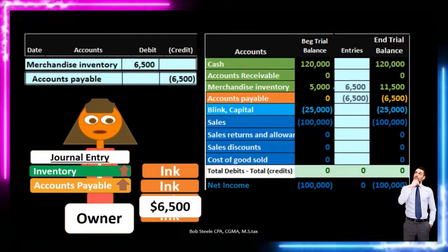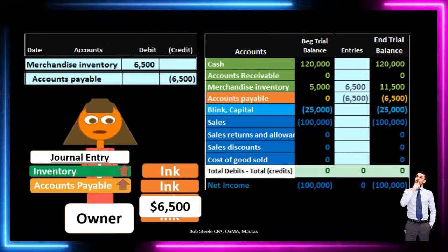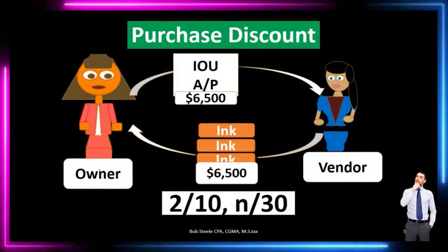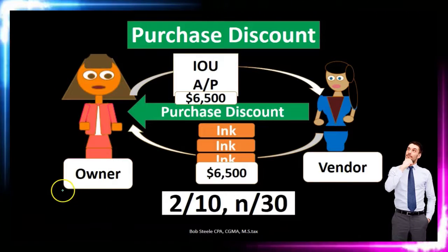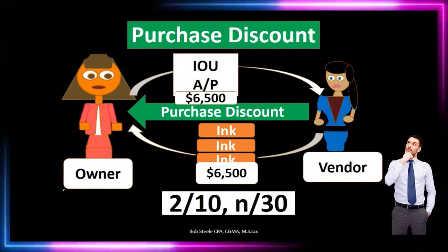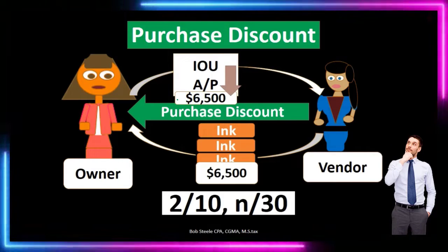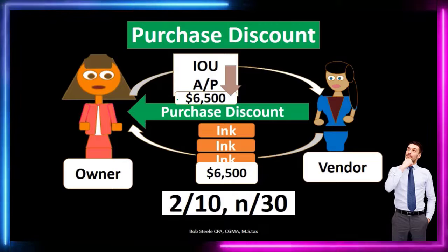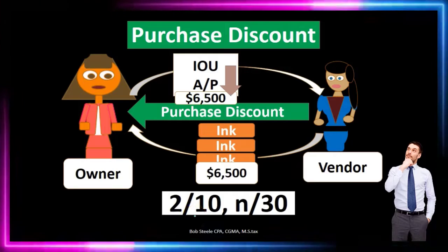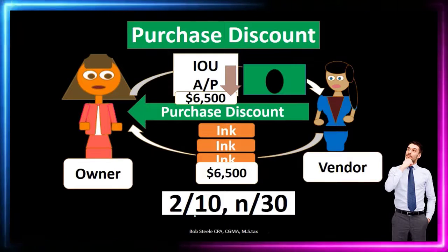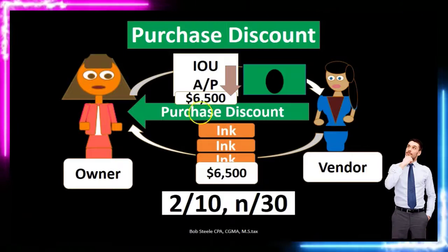This is just the recording of the transaction: six thousand five hundred increasing inventory and increasing accounts payable. If we then paid within the discounted time period, the purchase discount would be granted from the vendor to us — the purchaser. The six thousand five hundred would be reduced, meaning we reduce the amount of the IOU because we get the two percent discount for paying within the ten-day discount period. That also reduces the amount of cash we have to pay.